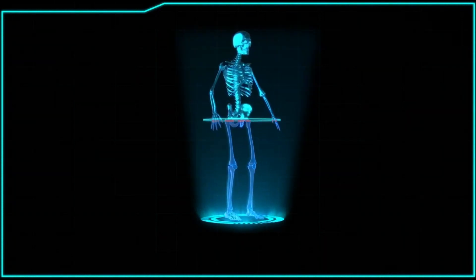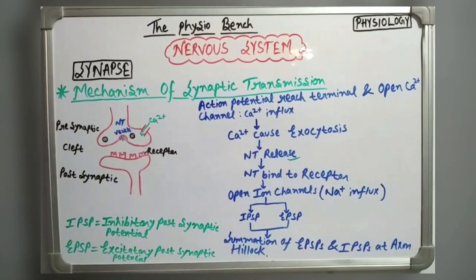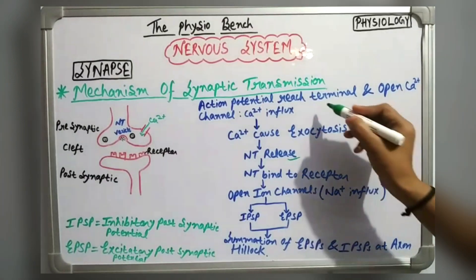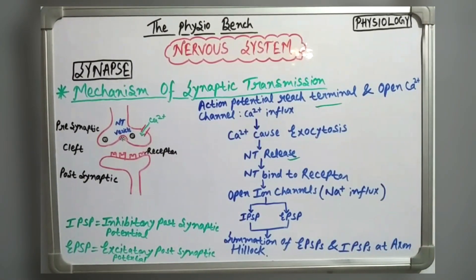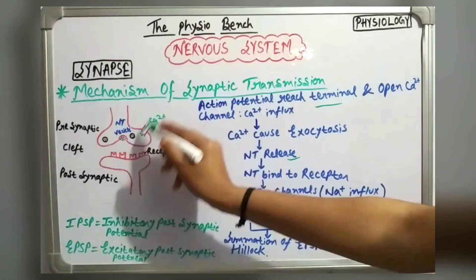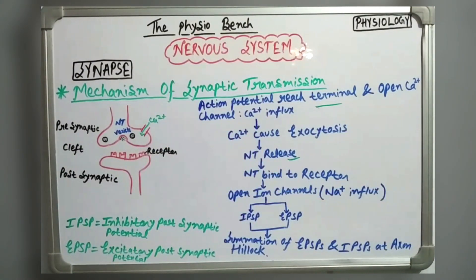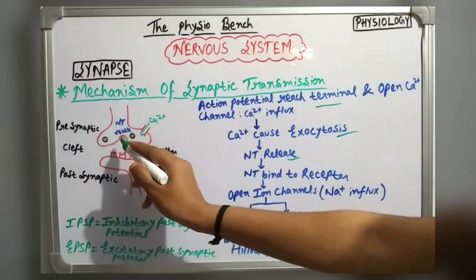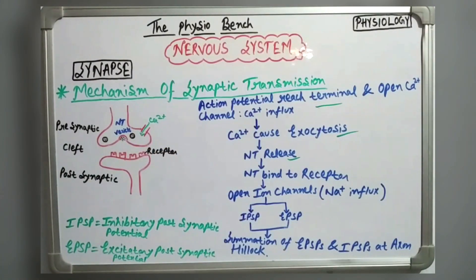So why waste time, let's get started. Today we will discuss the mechanism of synaptic transmission, which starts with the action potential reaching the axon terminal. Calcium channels open, you can see calcium causing exocytosis and neurotransmitter release here.